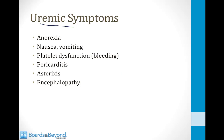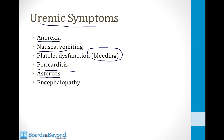The symptoms of uremia include anorexia — patients lose their appetite — as well as nausea and vomiting. Platelets don't work properly with uremia, so bleeding occurs more easily. Pericarditis, called uremic pericarditis, is a classic symptom. Asterixis is a tremor or flap when patients extend their arms. Encephalopathy is the confusion associated with uremia.